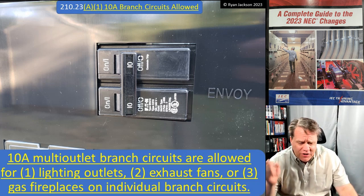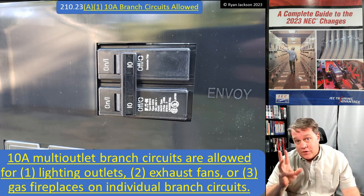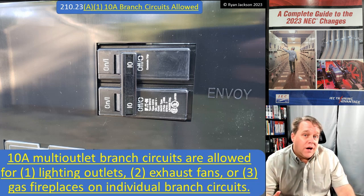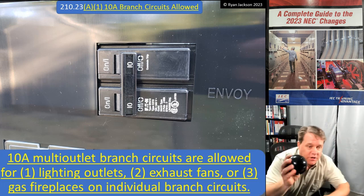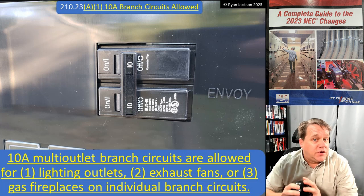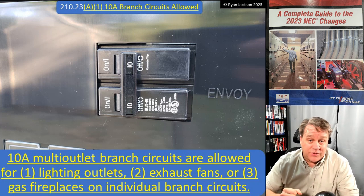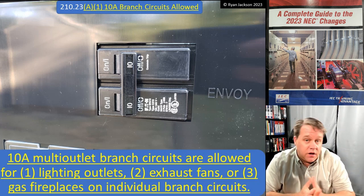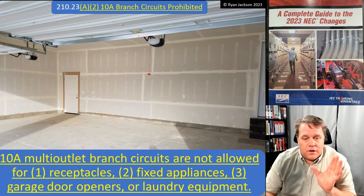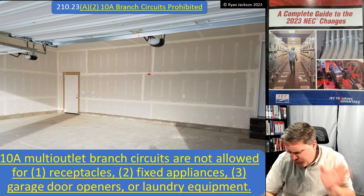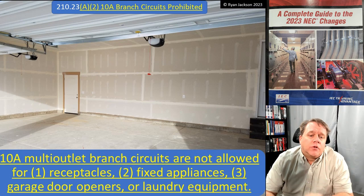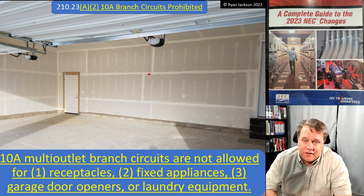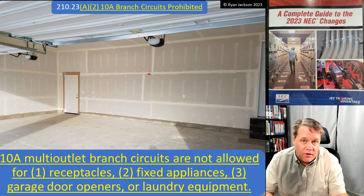In future editions of the code, you'll probably see discussion for 16-gauge copper and 14-gauge copper-clad aluminum, but I don't think those are going to make it into the 2026 code. They tried to get 14-gauge copper-clad aluminum into the 2020 and 2023 codes, but changes like that don't happen overnight. 10-amp circuits are not allowed for receptacles, fixed appliances, garage door openers, or laundry equipment. Until we have smaller conductors and 10-amp AFCIs, you're not going to see 10-amp circuits.